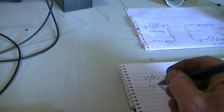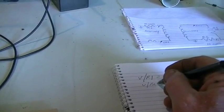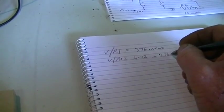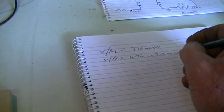So our voltage across our primary will be our 4.72 minus the voltage drop across our resistor, which is 376 millivolts RMS.